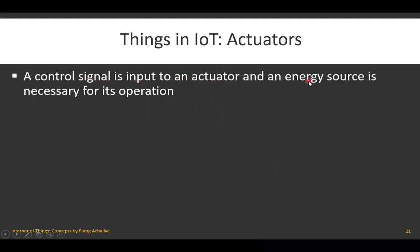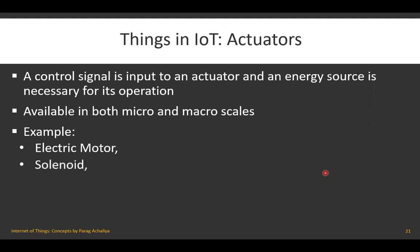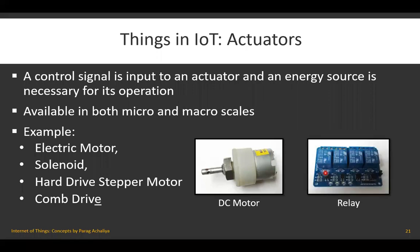A control signal is the input to an actuator, and an energy source is necessary for its operation. Actuators are available in both micro and macro scales. Various examples of actuators include electric motors, solenoids, hard drives, stepper motors, and combo drives. A DC motor is an example of an actuator. A relay can also be treated as an actuator — the work of a relay is to turn things on and off.